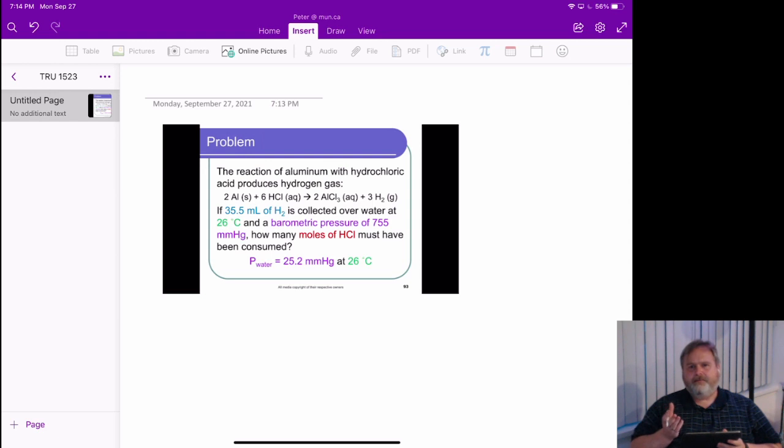We can connect any of these chemicals together as long as we have an amount in moles for one of them. And we see we're getting information about hydrogen: 35.5 milliliters of hydrogen is collected over water, 26 degrees Celsius, and a barometric pressure of 755 millimeters of mercury.